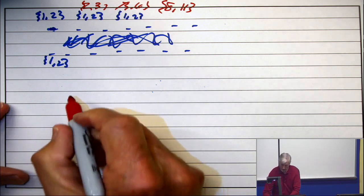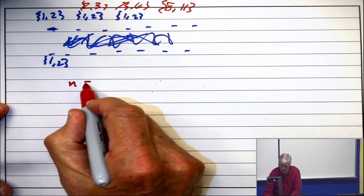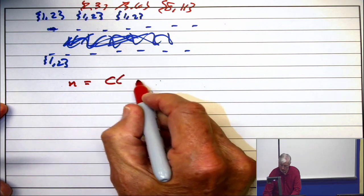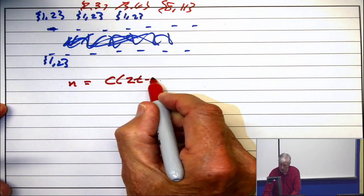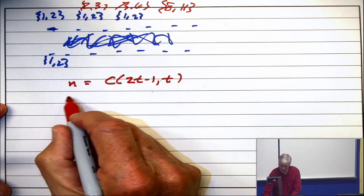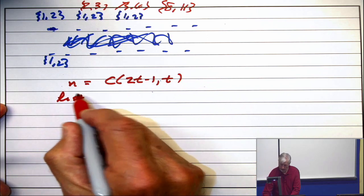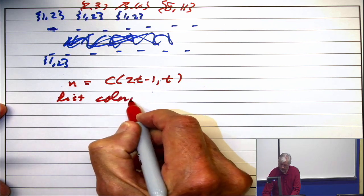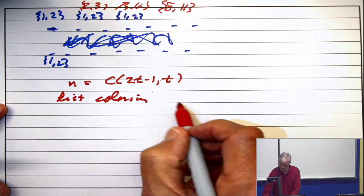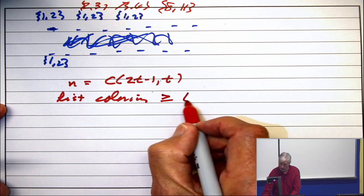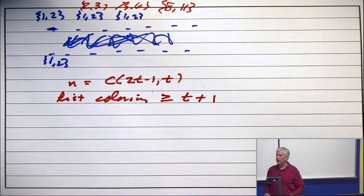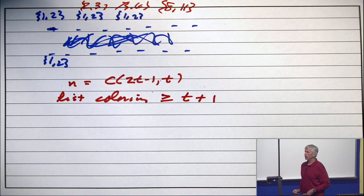And if you take n to be the binomial coefficient, 2t minus 1, choose t, then the list coloring can't be done with lists of size t. So it's greater than or equal to t plus 1. And let's explain this.